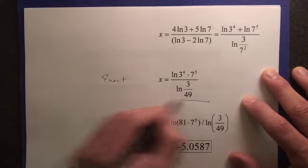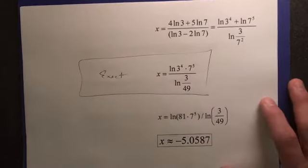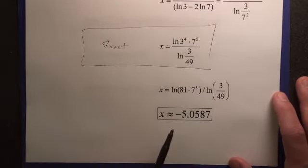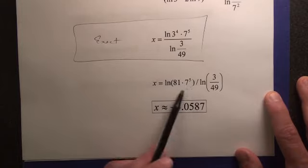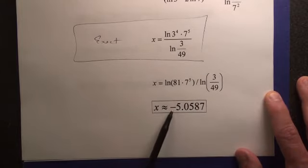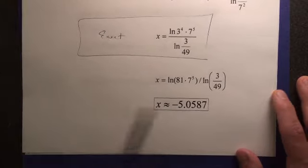You may have to do that on your quiz and test in order to get credit. Now, if they want a rounded off answer, you're just going to end up doing the numerator, natural log of that, divided by the natural log of the denominator. You're going to get negative 5.0587.